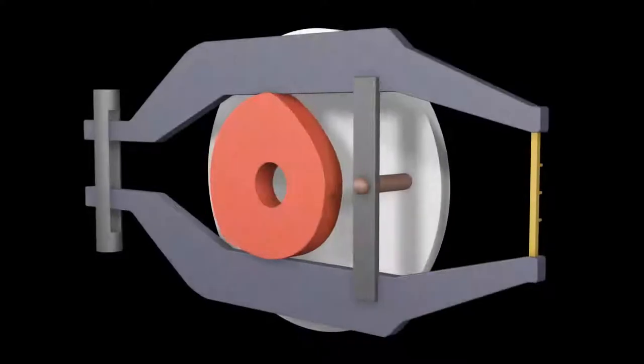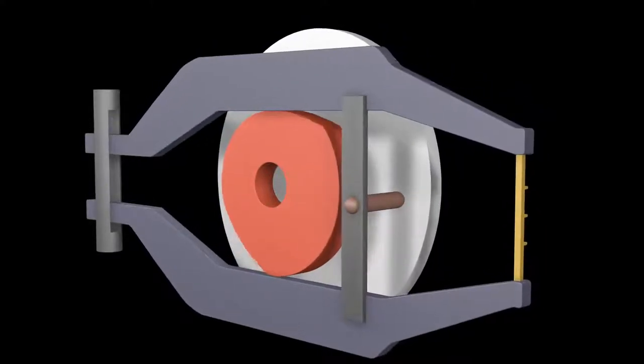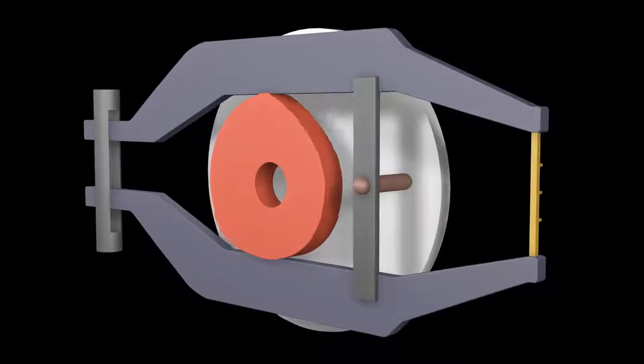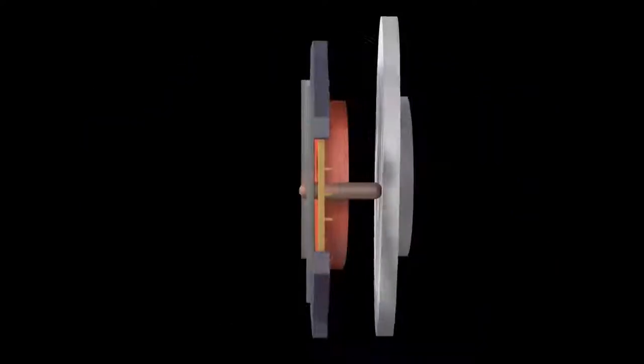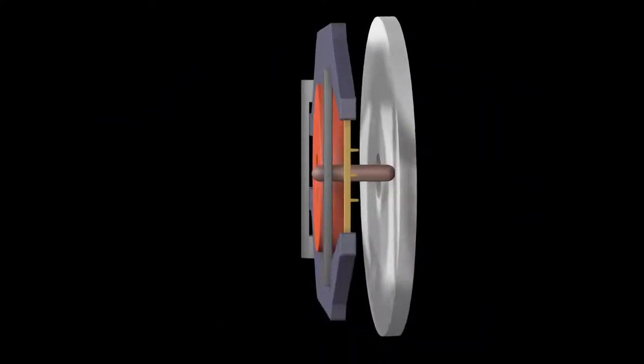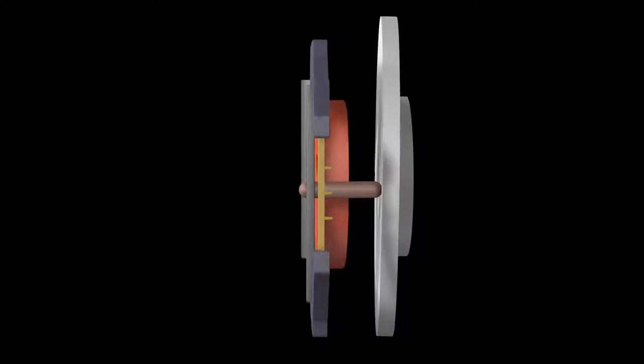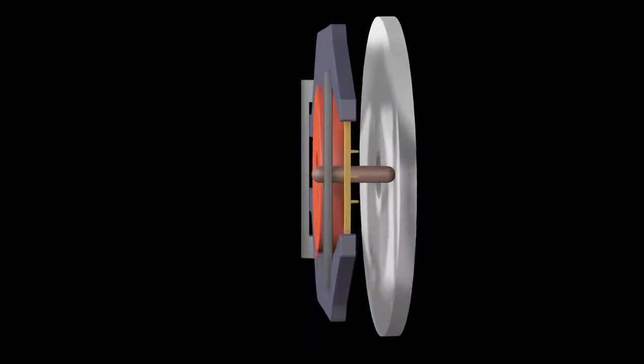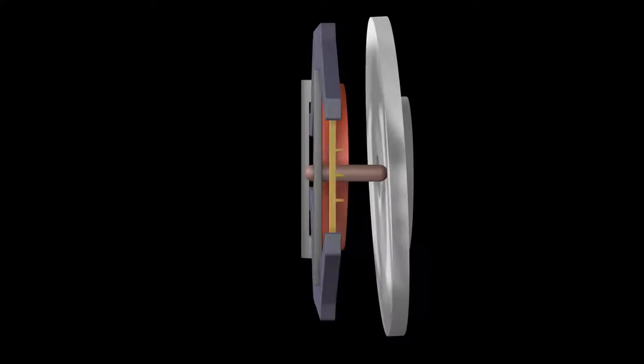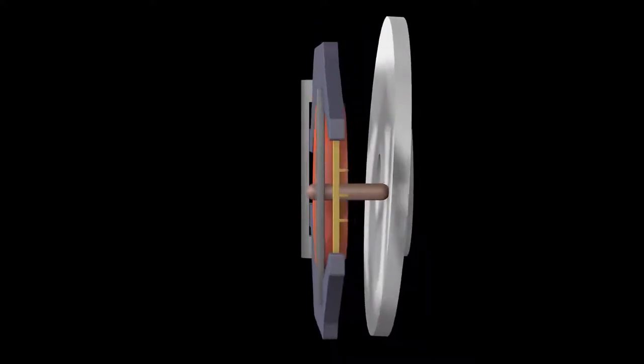When the axle turns, the disc wobbles. A horizontal post connected to the shuttle arms is pressed into contact with the wobbling disc by the spring force. As the axle turns and the disc wobbles, the shuttle arms are rhythmically pressed backwards. This movement is synced with the eccentric cam to create the required motion of the shuttle.